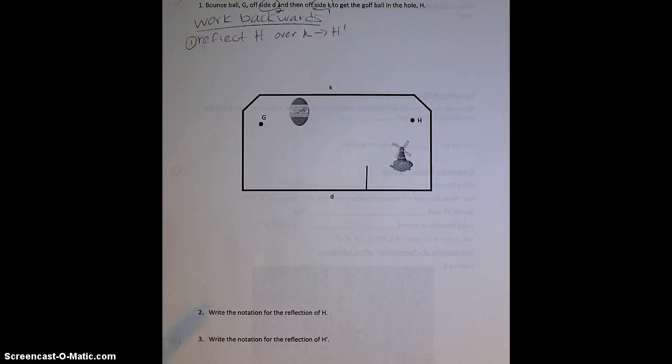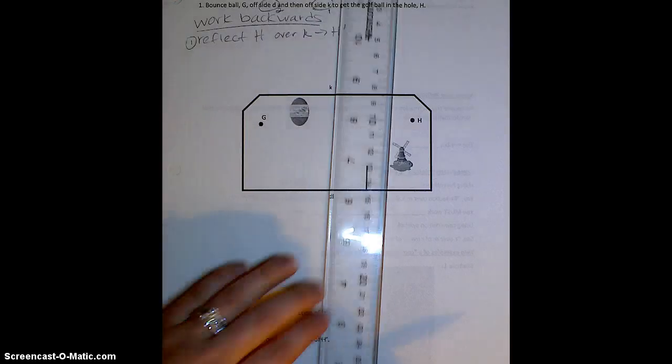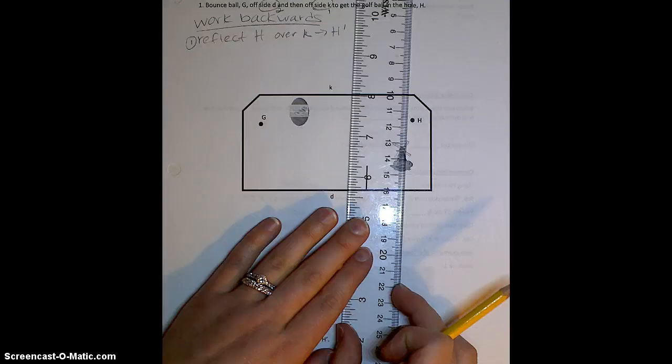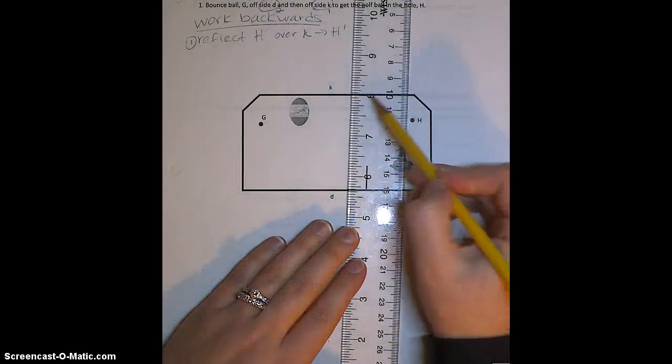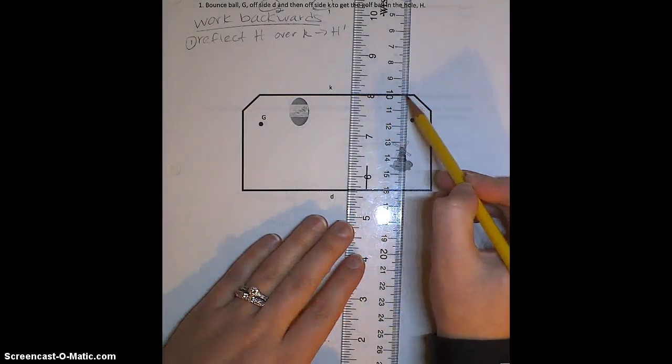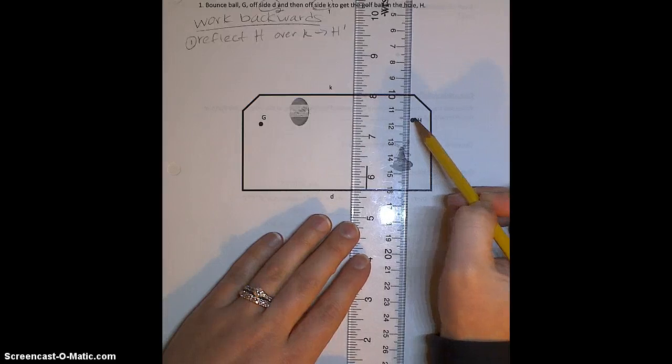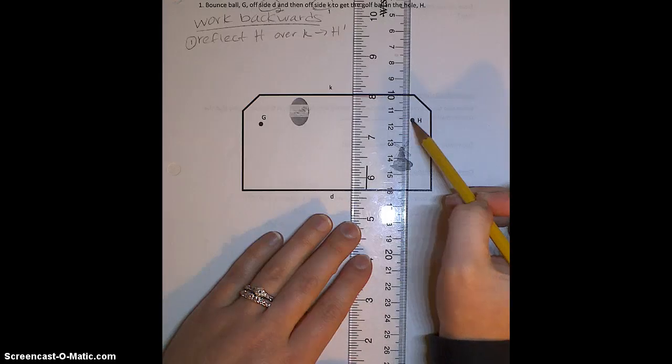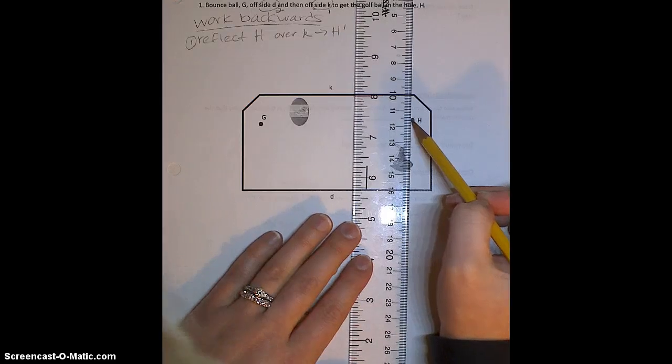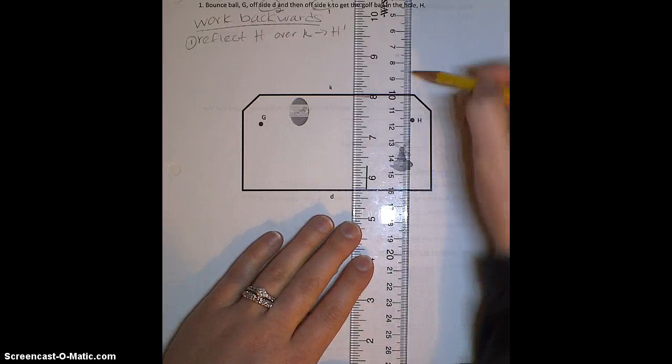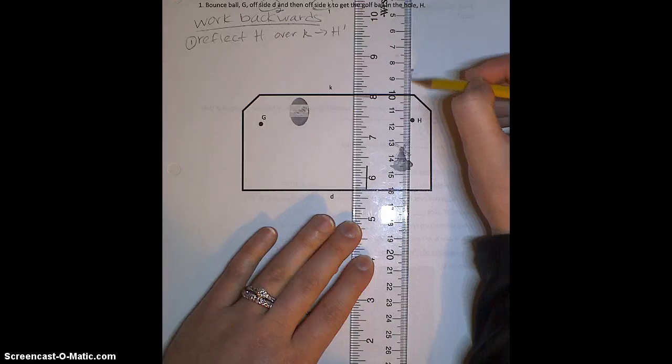When you do this, you have to make sure that you line up your ruler really carefully. So I'm going to line up my 10 mark perfectly with the line of reflection K, and have the edge of the ruler line up with point H. And I can see that this is about 1.6 centimeters away, so I do the same on the other side.